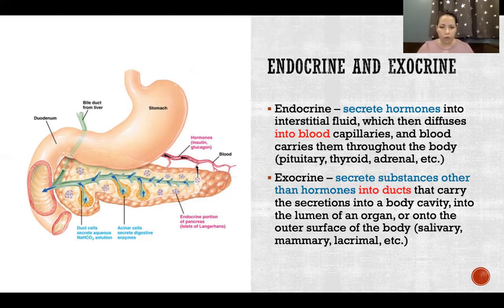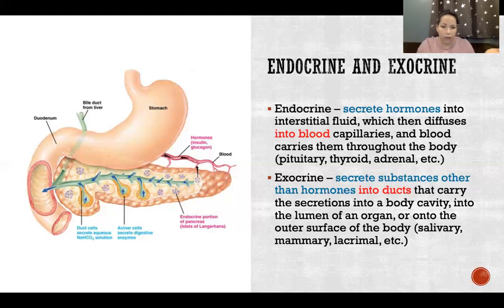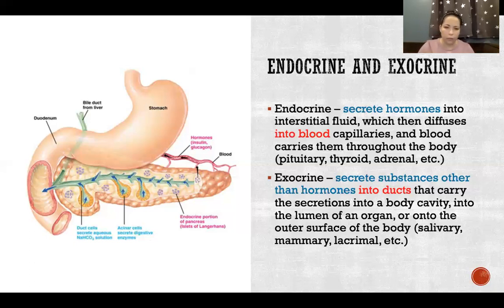Endocrine glands are part of the endocrine system — they secrete hormones that go into the blood. Exocrine glands can be part of any system in the body; they secrete anything but hormones, and their secretions go into ducts that carry them into the inside of an organ, a cavity, or onto the surface of the skin — not into the blood.